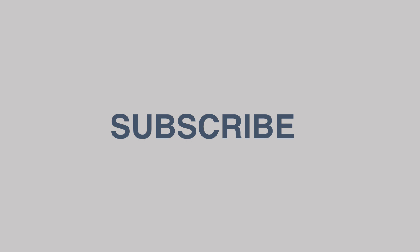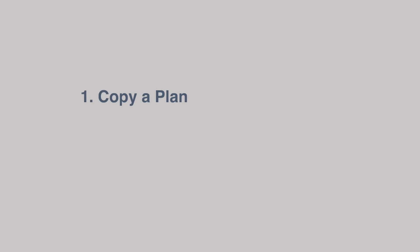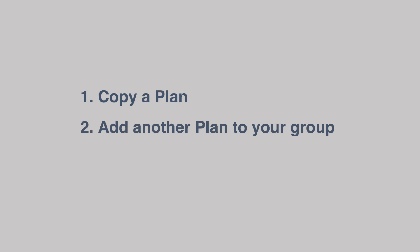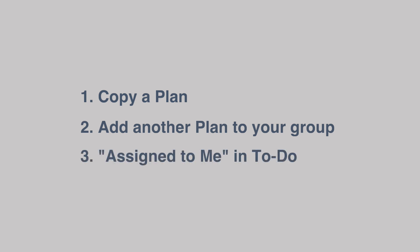Okay, so I've got three tips. First one is copying a plan, so making a copy of an existing plan. Second is to add another plan to your group — so if you've got a group with a plan already, you can add another plan to it. And the final one is to assign tasks so they show up in other people's to-do apps.